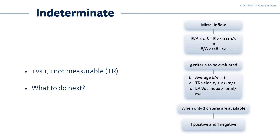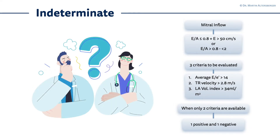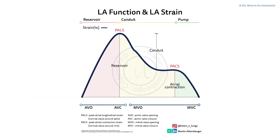If one criteria is positive and one negative — for example, an e/e' ratio of 10 and an LA volume index of 38 mL/m² — you have one positive and one negative criteria. You are in the situation of indeterminate, meaning you do not know if diastolic dysfunction with elevated filling pressures is present or not.